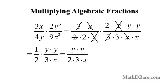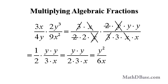Now separately multiplying the numerators and denominators of the two reduced fractions, we get y times y over 2 times 3 times x, or y squared over 6x.